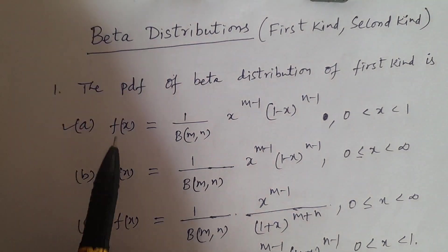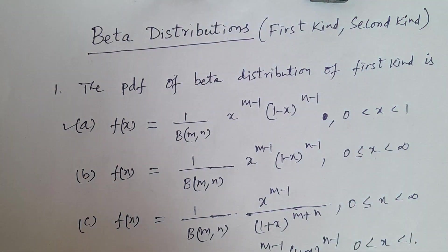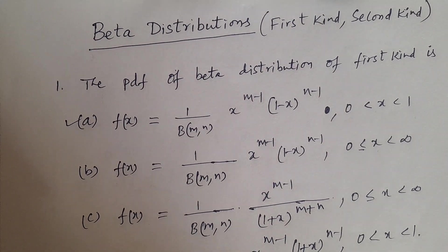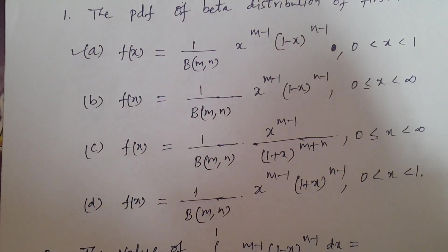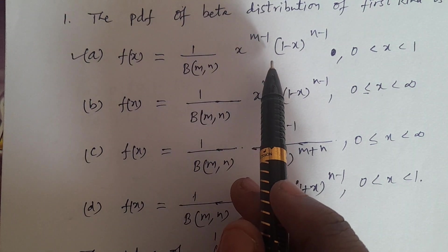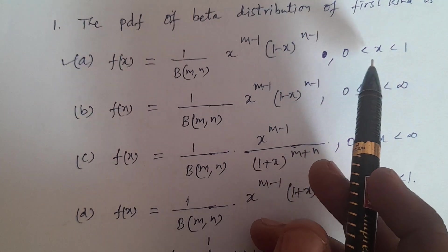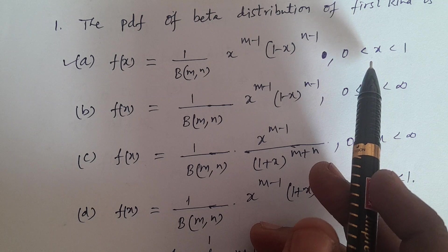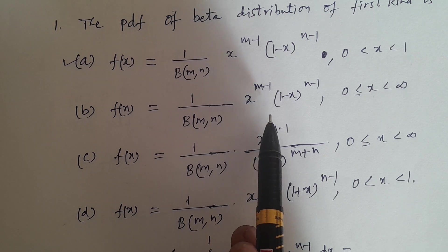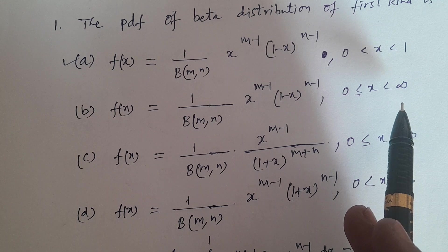Let me start. The PDF of beta distribution of first kind is — what is the probability density function of beta distribution of first kind? Options: A — f(x) = 1/β(m,n) · x^(m-1) · (1-x)^(n-1), limits 0 < x < 1. B — f(x) = 1/β(m,n) · x^(m-1) · (1-x)^(n-1), 0 ≤ x < ∞.